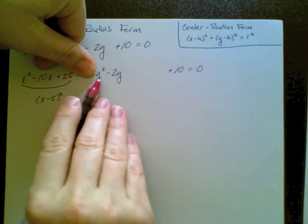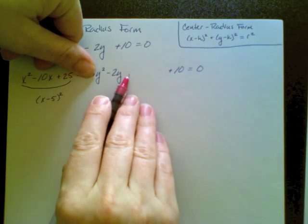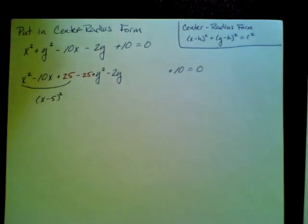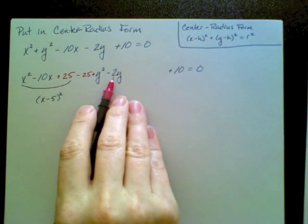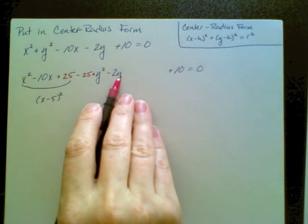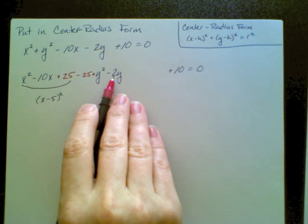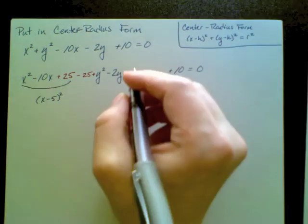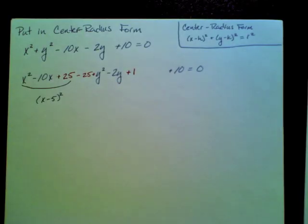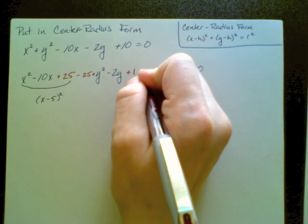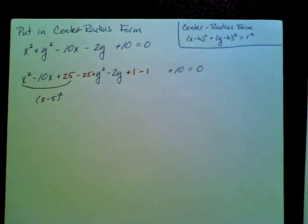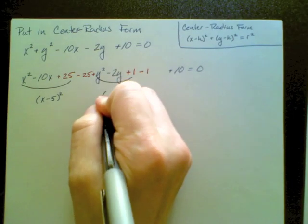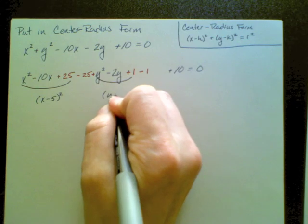So now let's look at the y part. I want to do the same thing. I want to add in a fancy form of 0 that will give me one number that will allow this to factor as a perfect square. I'm going to approach it the same way. I look at the coefficient of my y, I divide it by 2. So negative 2 divided by 2 will be negative 1. And then I square that, and negative 1 squared is positive 1. Since I can't just add something in, I need to balance it out by also subtracting 1. So now this factors as the perfect square (y-1) squared.